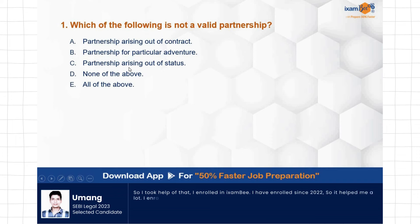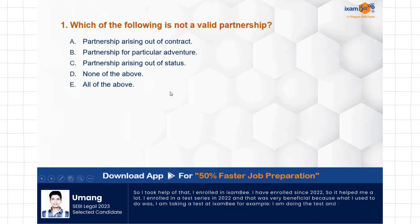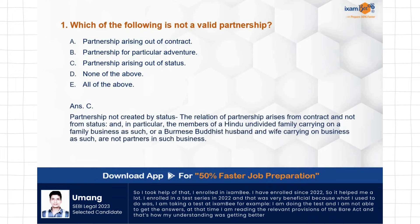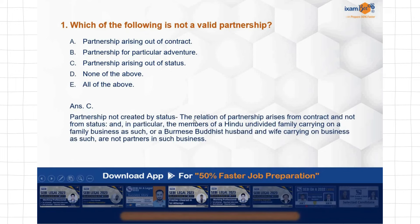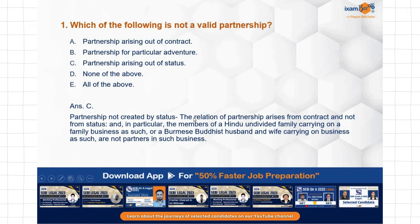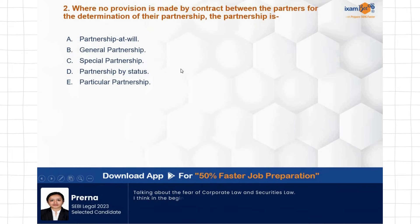The options again: partnership arising out of contract, partnership for a particular adventure, partnership arising out of status, none of the above, all of the above. The correct answer is C — partnership arising out of status. Partnership is not created by status. This is very clear from Section 5 of the Partnership Act. Partnership arising out of status is not true about partnership.